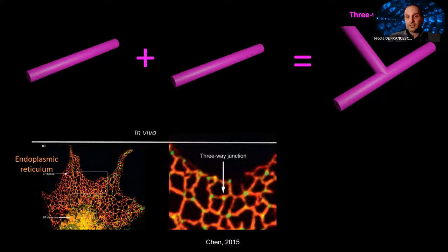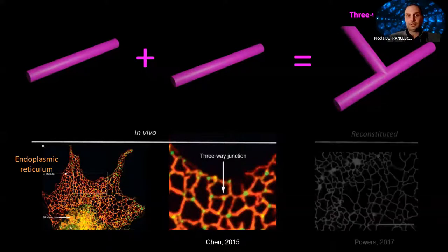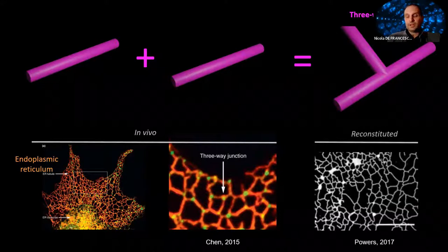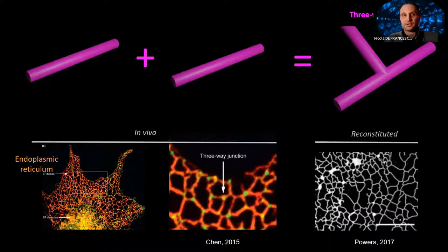Remarkably, this membrane architecture — the ER tubule network — has been reconstituted in vitro using liposomes and ER resident proteins. In this image, you can see the endoplasmic reticulum in orange and a protein called Luna Park in green, which sits at the junctions and stabilizes them.